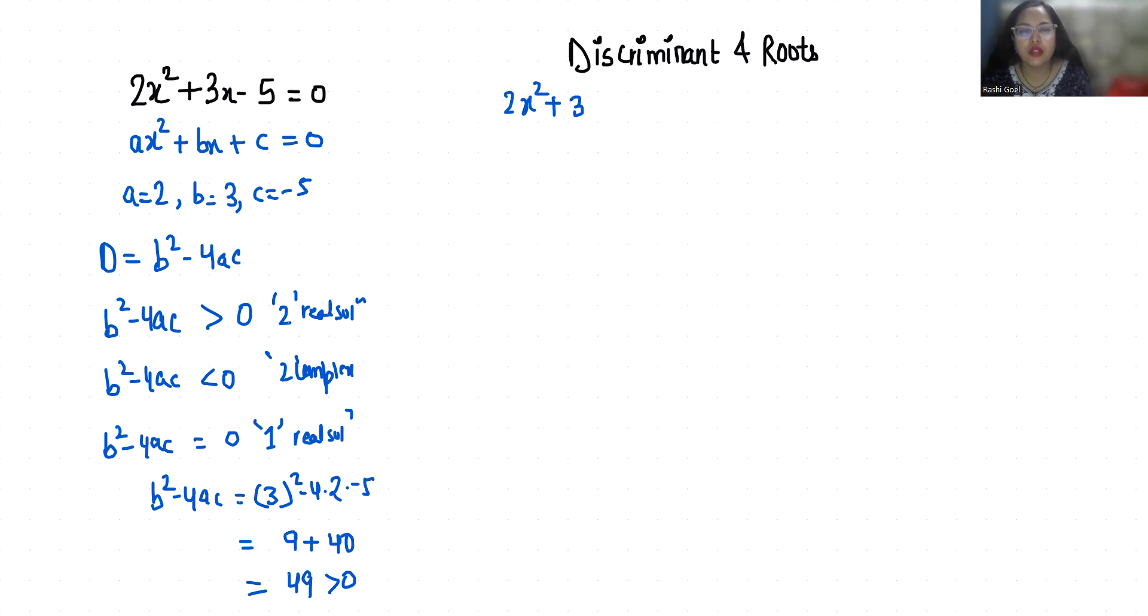Let's find out the real solutions or roots. The equation is 2x² + 3x - 5 = 0. Now I am going to use the quadratic formula, that is x = (-b ± √(b² - 4ac)) / 2a. So -3 ± √49 / (2 × 2), which is -3 ± 7 / 4.